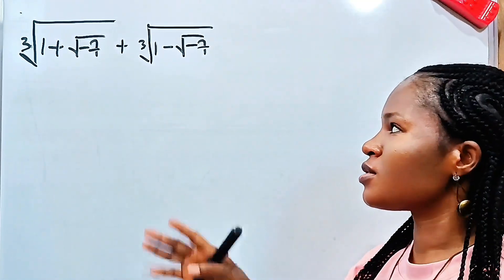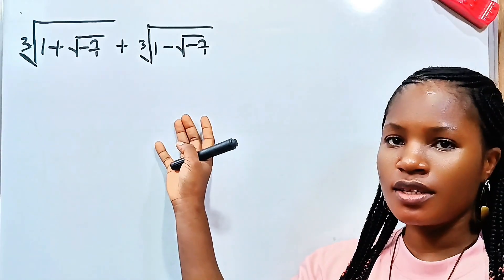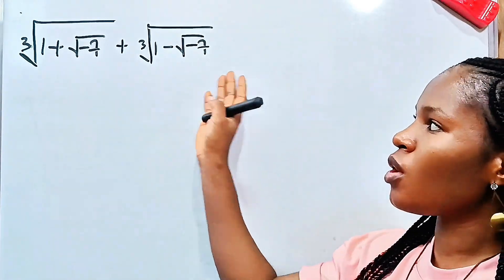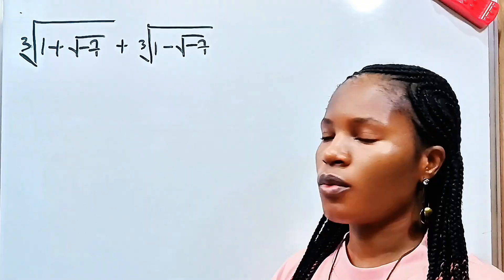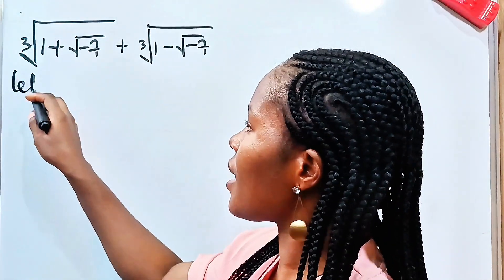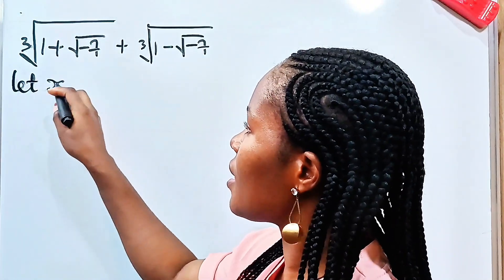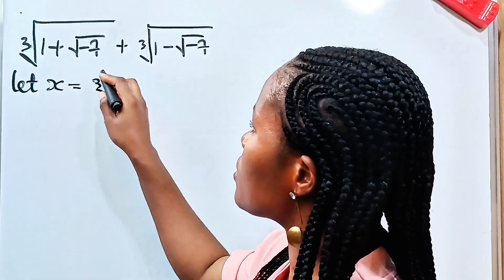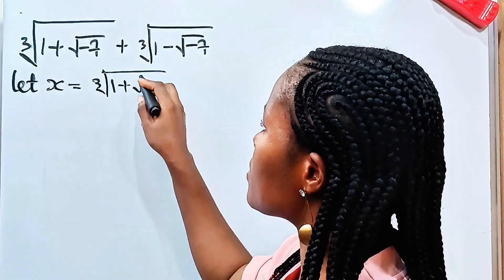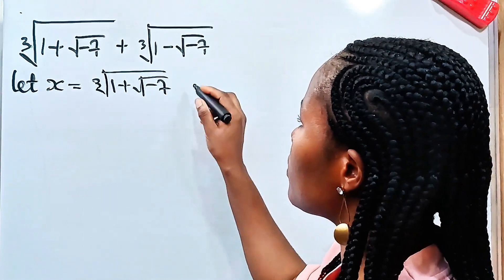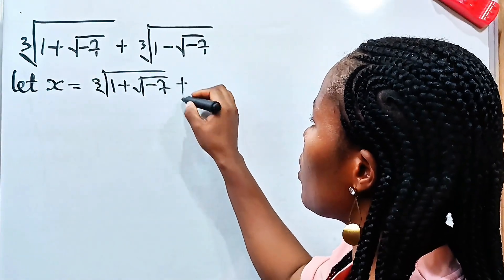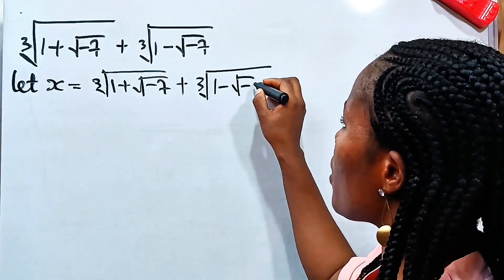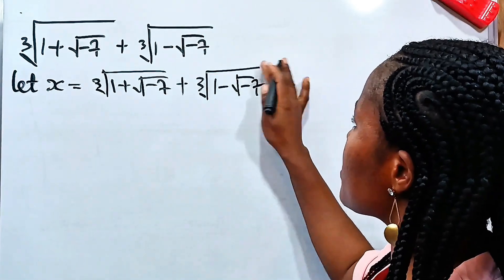We are asked to solve and evaluate this. First of all, let's call this x. So we can say let x be equal to the cube root of (1 plus square root of minus 7) plus the cube root of (1 minus square root of minus 7).